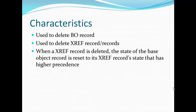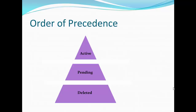When an xref record is deleted, the state of the base object record is reset to the xref record state that has the higher precedence. For example, consider one record in the base object that has three active xref records with row ID xref values one, two, and three. Record two is the survivor in the base object. If row ID xref two is deleted, then out of one and three, a winner will be decided and will become the survived record in the base object. If you delete record one, then three will be the winner. If you delete record three as well, then the base object record will be marked as deleted.